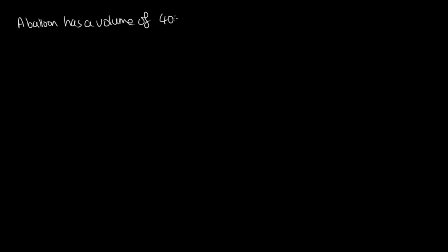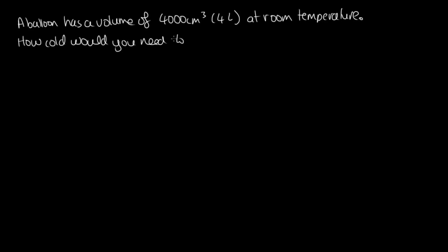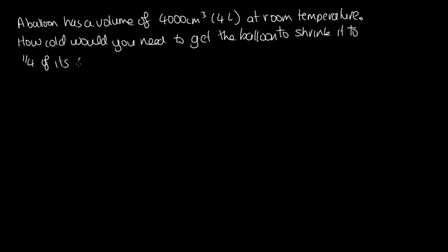Let's try a problem on that now. A balloon has a volume of 4,000 centimeters cubed, which is 4 liters, at room temperature. How cold would you need to get the balloon to shrink it to a quarter of its current size? To answer this, we're going to use the formula V1 on T1 is equal to V2 on T2.